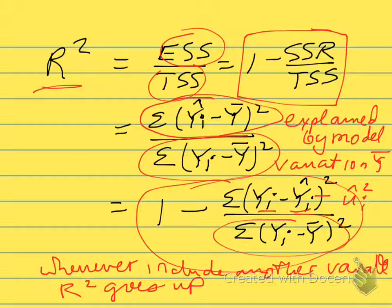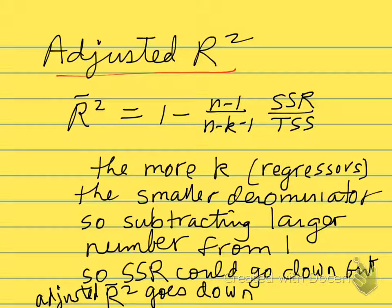In economics, we don't want to encourage people to add more variables that maybe aren't relevant to the model. So we have a better measure of goodness of fit, which we call the adjusted r-square. This adjusted r-square, usually written as r-bar-squared, is equal to one minus the sum of squared residuals divided by the total sum of squared, but we adjust it by this n minus one divided by n minus k minus one.